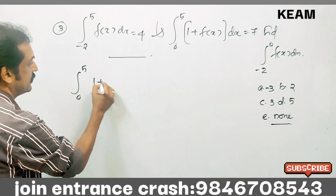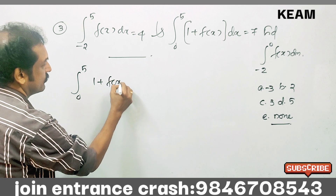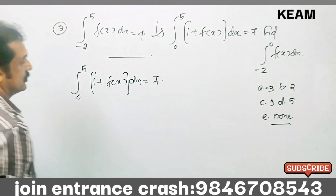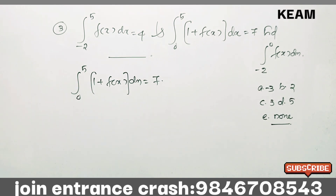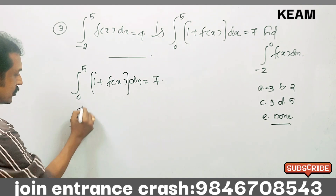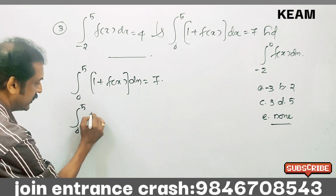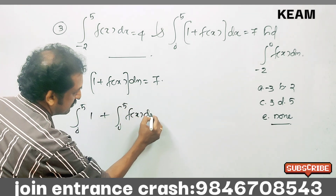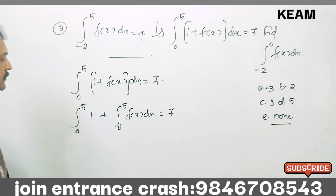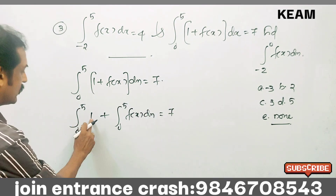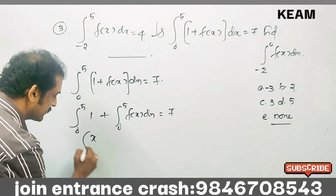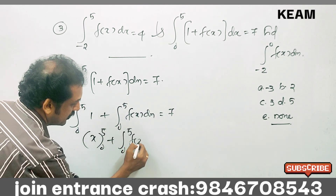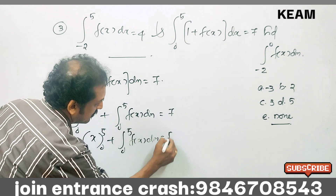Integral from 0 to 5 of (1 plus f(x)) dx equals 7. We can split this as: integral 0 to 5 of 1 plus integral 0 to 5 of f(x) dx equals 7. The integral of 1 over the limit 0 to 5 is 5, so integral from 0 to 5 of f(x) dx equals 7 minus 5, which is 2.